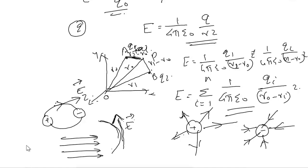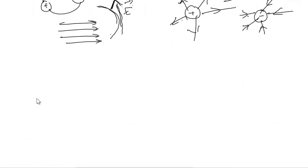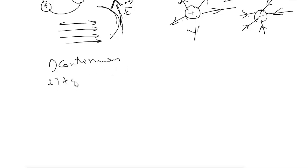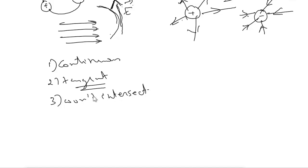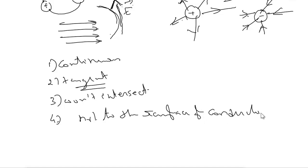Properties of electric field lines: First, they are continuous and do not form closed loops. Second, the tangent to a field line gives the direction of electric field intensity. Third, field lines do not intersect each other — if they did, it would give more than one direction. Fourth, electric field lines are always normal to the surface of a conductor.